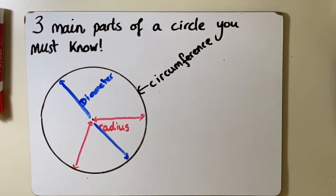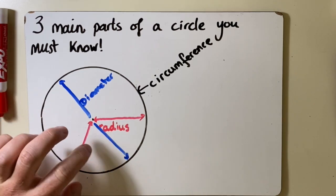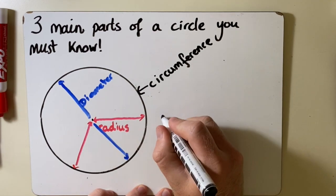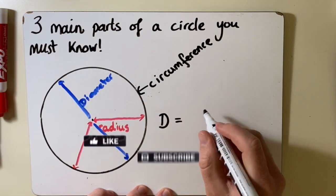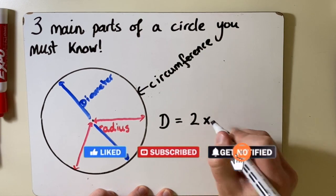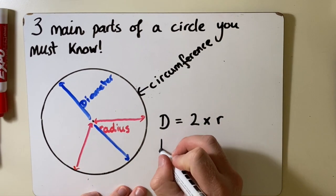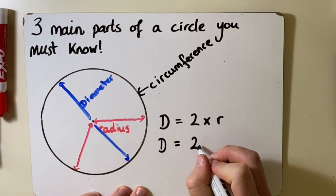Now another thing that you must know is that the diameter is double the radius. And we can write that as D for diameter. So diameter is the same as 2 times radius, or we can even shorten this to diameter equals 2R.